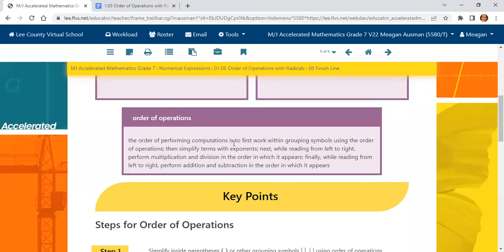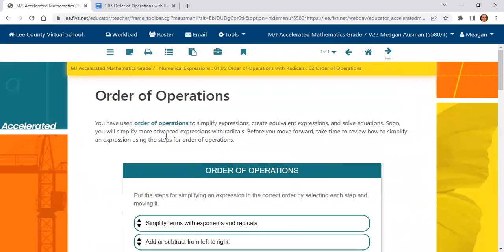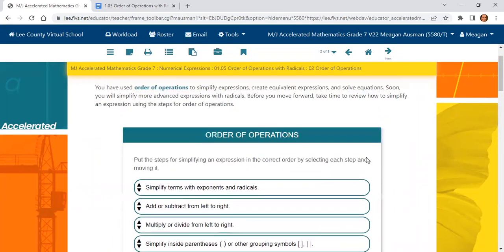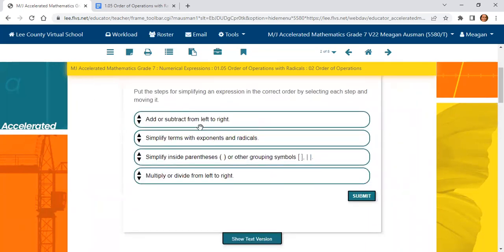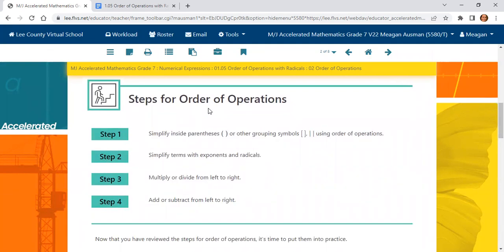Then we have the order of operations. This is the order that we calculate or compute our work. We start with grouping symbols, then we go to exponents and radicals, then we do multiplying or dividing from left to right, then we'll do adding or subtracting from left to right. Going back to our first page, our objective today is to use the order of operations to solve multi-step math problems and to use the order of operations to solve multi-step real-world problems. You can come into these lessons and drag these assignments around and then submit and check your work. Make sure that you're interacting with this very interactive textbook.